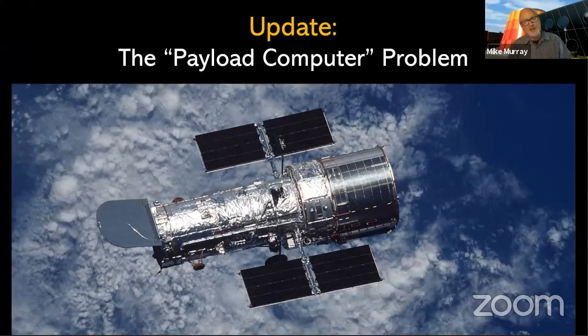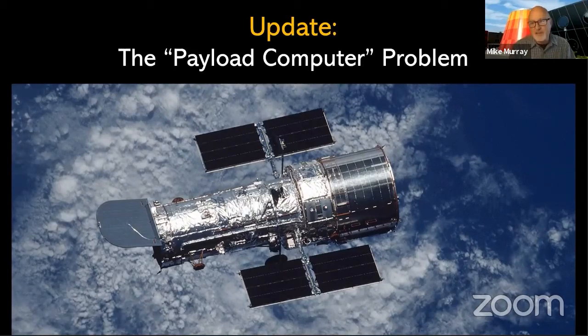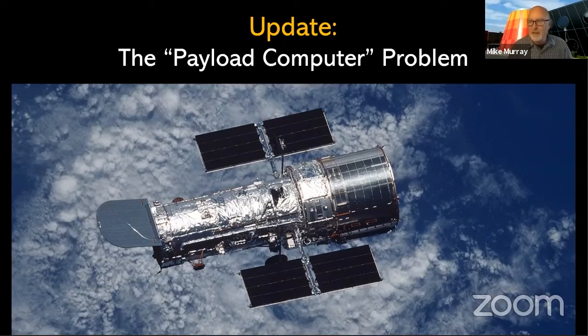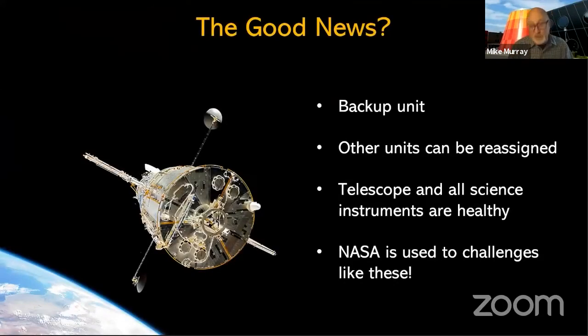All right. Well, as you probably all heard in the news, on June 13th, Hubble went into safe mode because its primary payload computer went offline. This is the unit that monitors and coordinates the science instruments. At first, it was thought to be a computer memory issue, but engineers are now actually looking at the CPU or its central processing unit or even its interface connection to other hardware. The good news, though, is that there are backup units, and the teams are still working on the problem. They haven't been able to bring up the first backup unit, and that's why they think it could be a connection or a CPU.